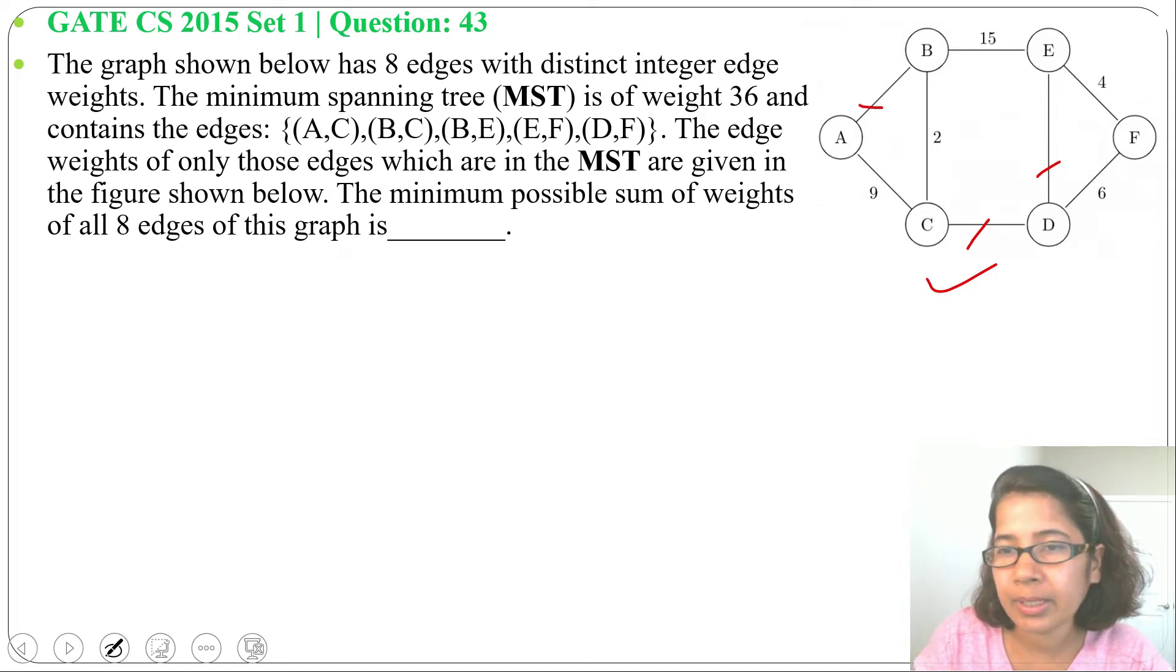So I will check one by one cycle. First in ABC cycle, BC is 2, AC is 9. So AB should be greater than 9.